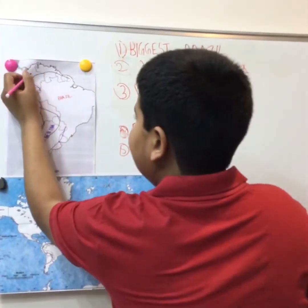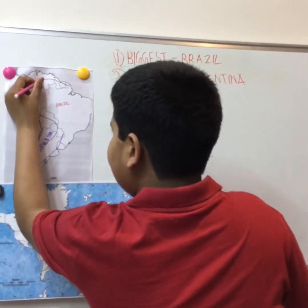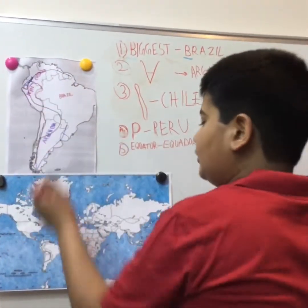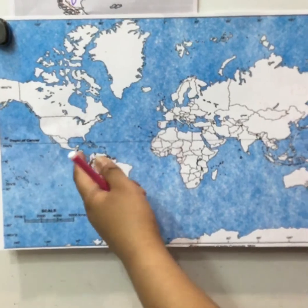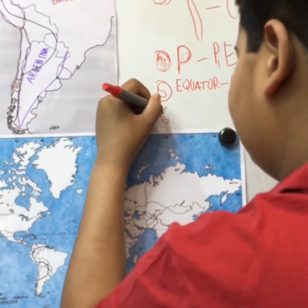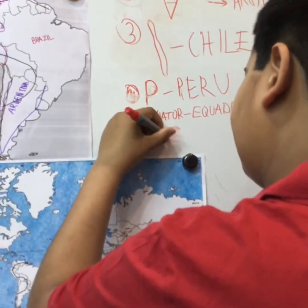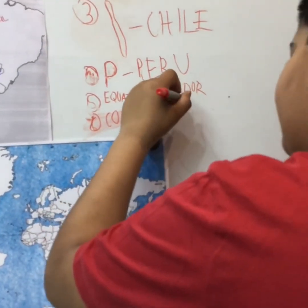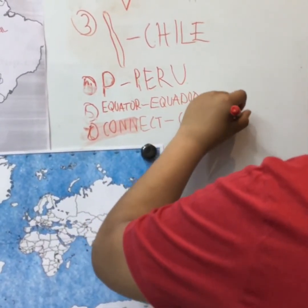The sixth country is Colombia. This is the country where Mexico and South America meet — it basically connects North America and South America. So C for Colombia and C for connect.